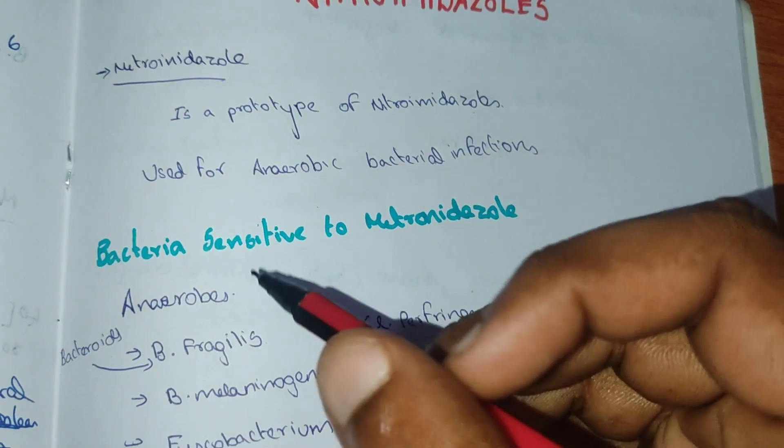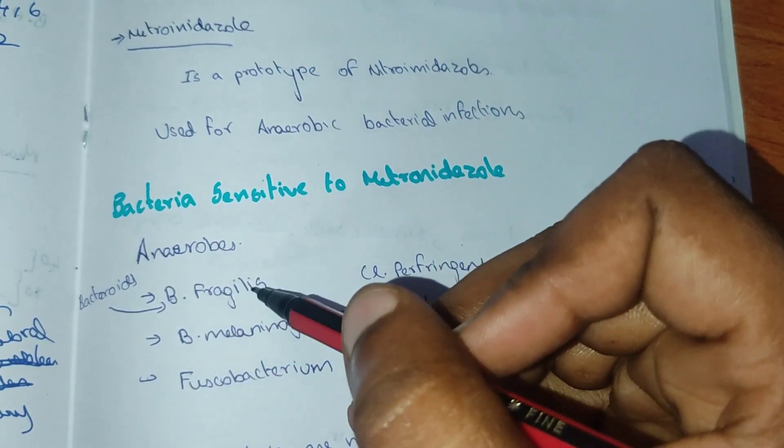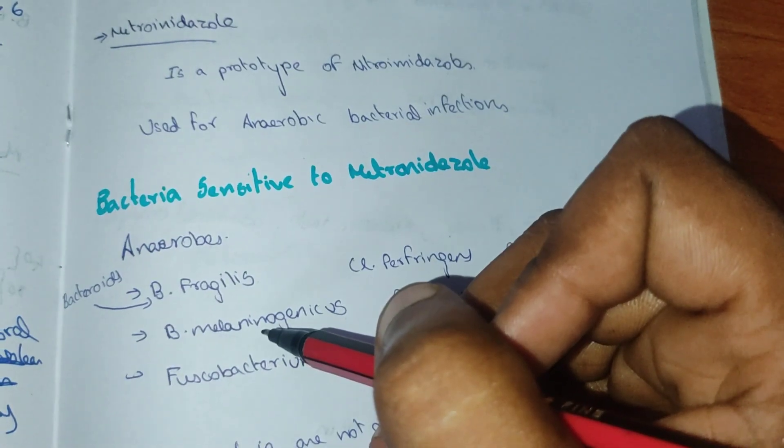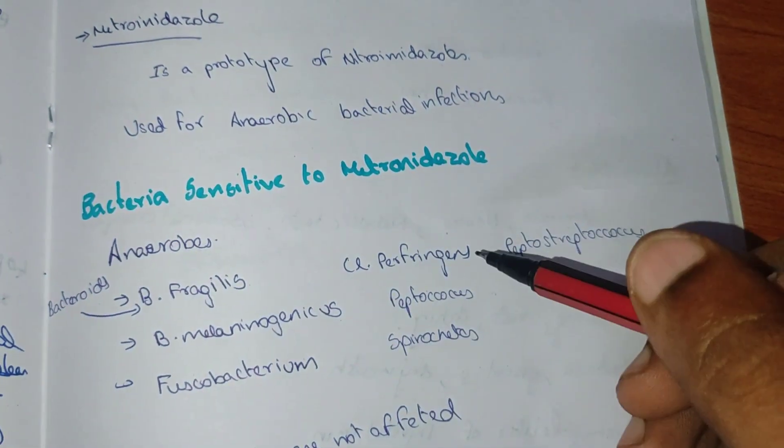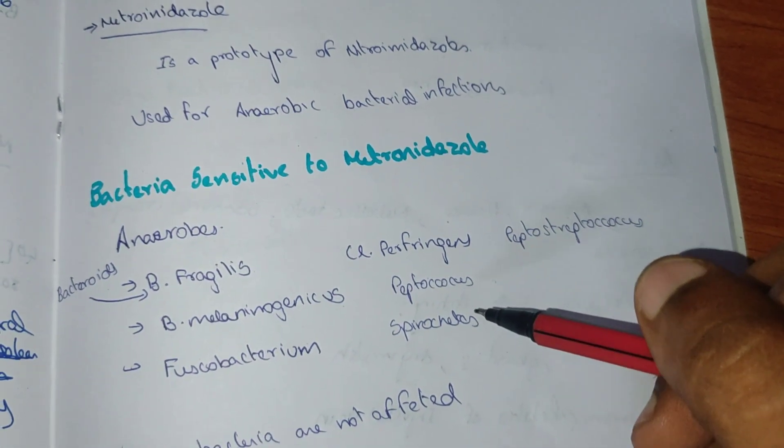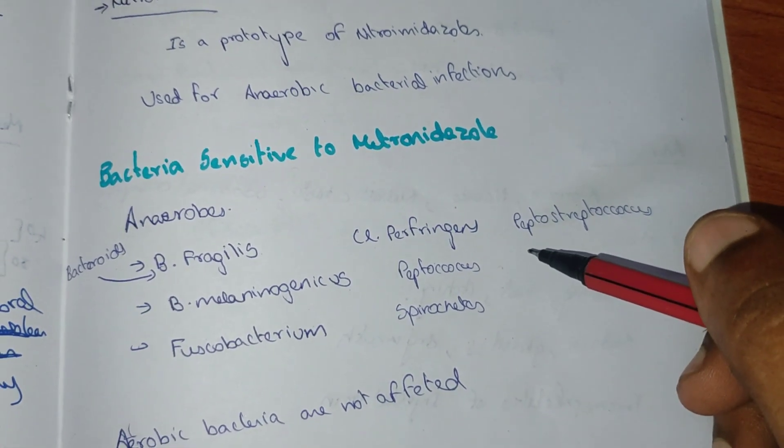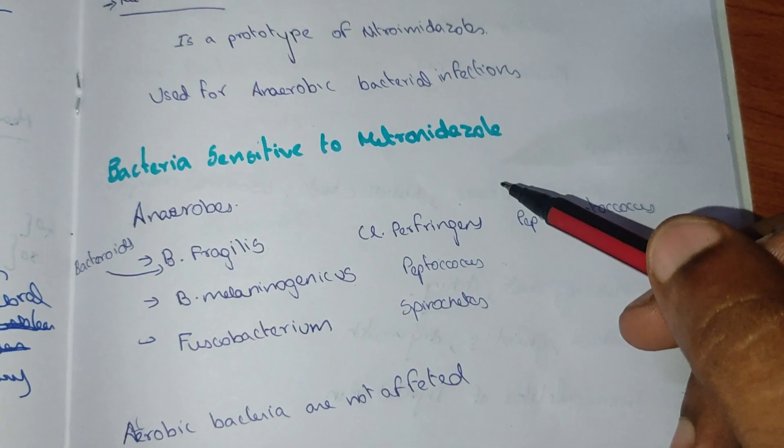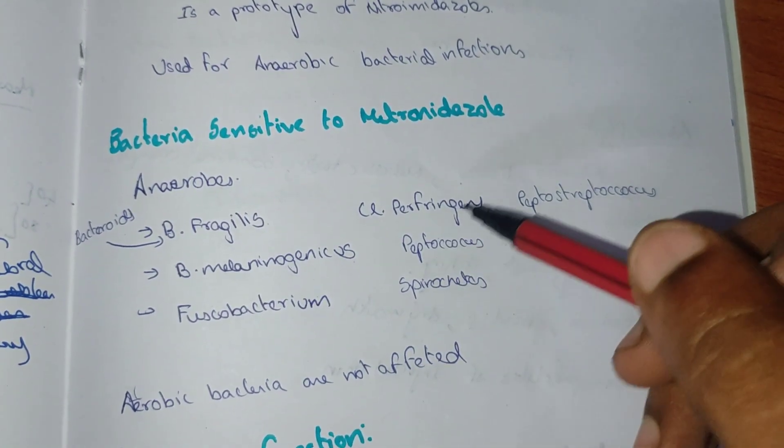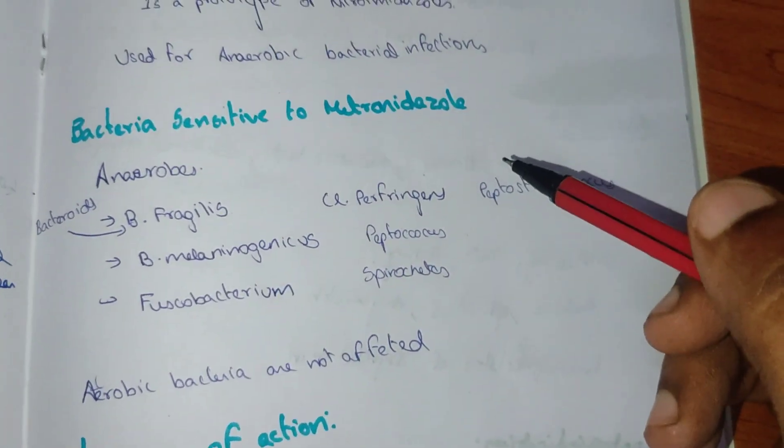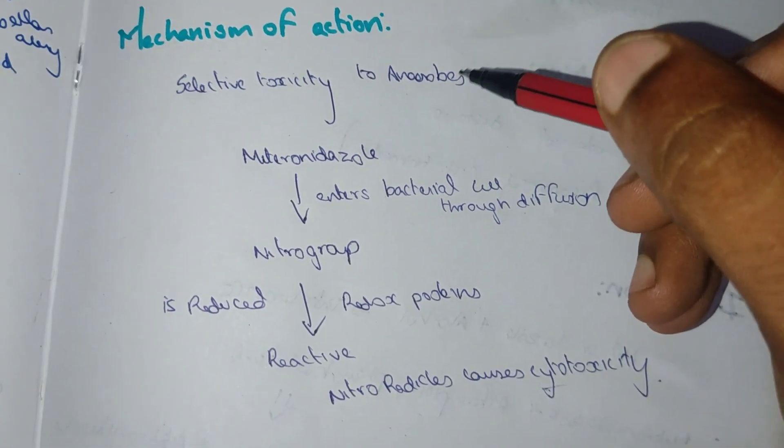The anaerobes sensitive to metronidazole are Bacteroides fragilis, Bacteroides melanogenicus, Fusobacterium, Clostridium perfringens, Peptococcus, spirochetes, and Peptostreptococcus. These are the bacteria which are sensitive to metronidazole. The aerobic bacteria are not affected by metronidazole.